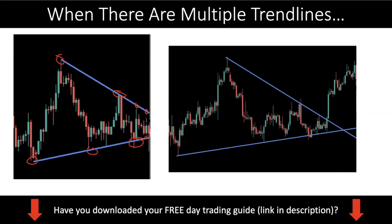So what do you do? This is the problem. If you have this problem, then this video will address it. To further illustrate, I have another example where a trend line was acting perfectly, but you also have a descending trend line at the same time. So what do you do in this kind of scenario? I want to give you some guidelines as to what you should be doing so that you can apply the trend line trading strategy in the right manner.